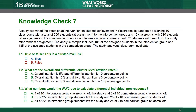What are the overall and differential cluster-level attrition rates? A. Overall attrition is 5% and differential attrition is 10 percentage points. B. Overall attrition is 13% and differential attrition is 3 percentage points. C. Overall attrition is 17% and differential attrition is 10 percentage points.